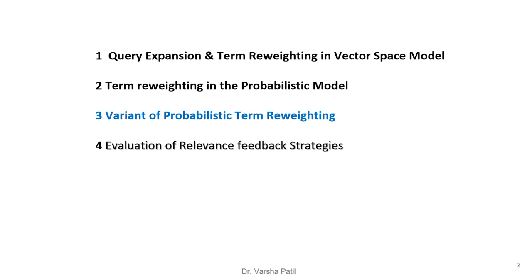Under user relevance feedback, three techniques are covered: first, query expansion and term reweighting in the vector space model; second, term reweighting in the probabilistic model; and third, the variant of probabilistic term reweighting. Videos on the first two topics have already been published. This video covers the variant of probabilistic term reweighting. To understand this concept, it is very important to first understand the probabilistic model.